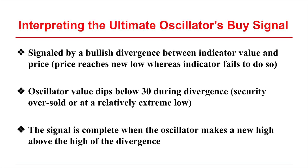Williams' buy signal has three steps. The first is that a bullish divergence occurs between the indicator value and price — basically, price reaches a new low and the indicator fails to do so. The second step is that the oscillator value dips below 30 during the divergence, which is to guarantee that the security is oversold or at a relatively extreme low. The final step, making the signal complete, is when the oscillator reaches a new high above the highest high of the period of the divergence.